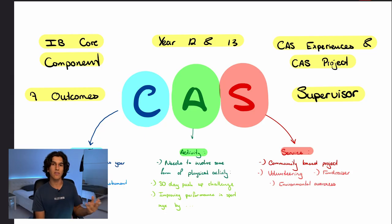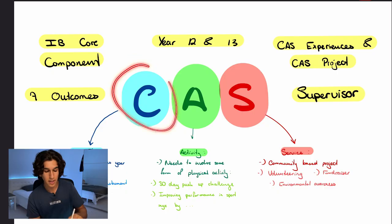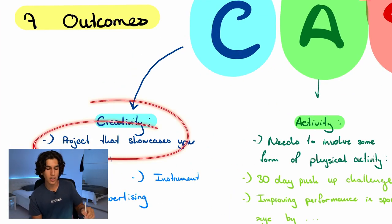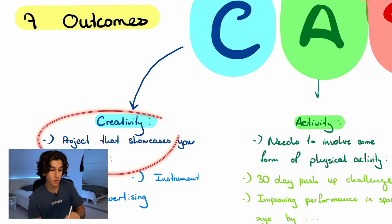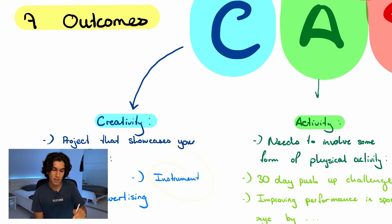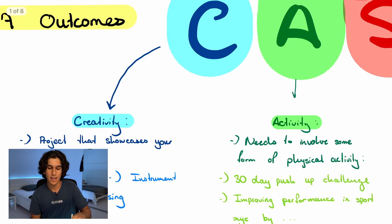The basis of CAS is that it makes more well-rounded students come out of the IB. It's a way to get students engaged in something other than their studies. There are three main parts — hence the name CAS. The C stands for Creativity, which is an experience or project that focuses on design, learning an instrument, or anything that showcases your creative side.